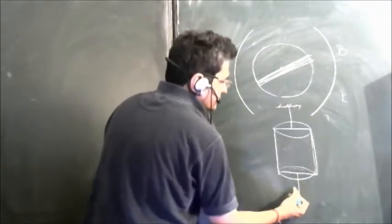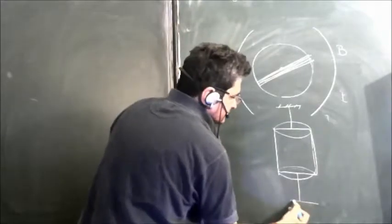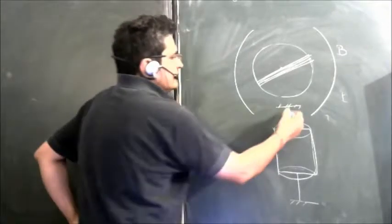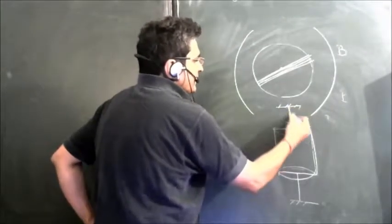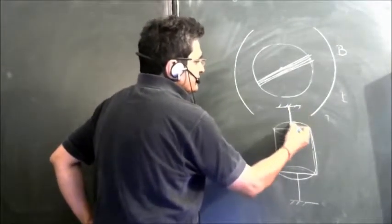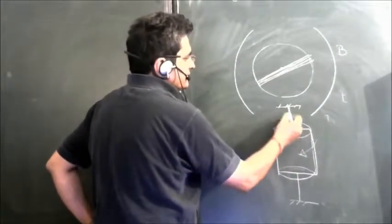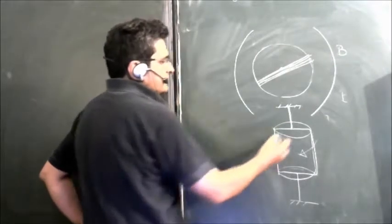It is just like a hanging kind of cylinder, but this strip has tendency to restore the rotation back. Suppose you rotate this cylinder, this strip will take it back because of the torsional constant.